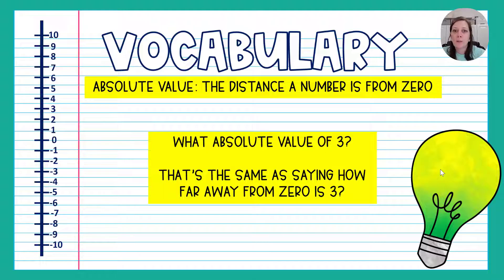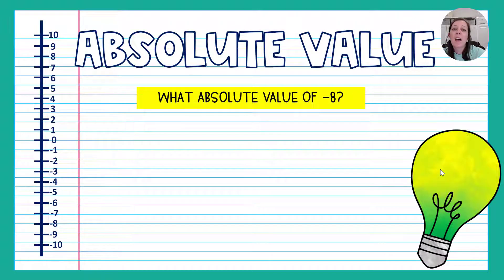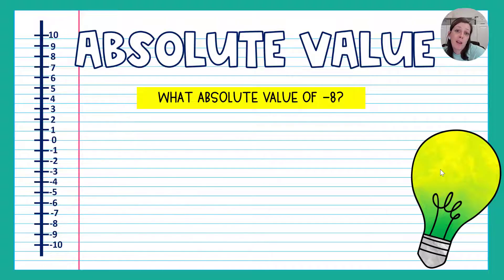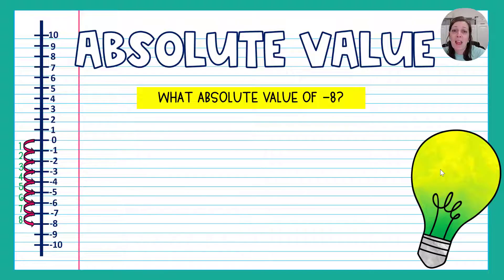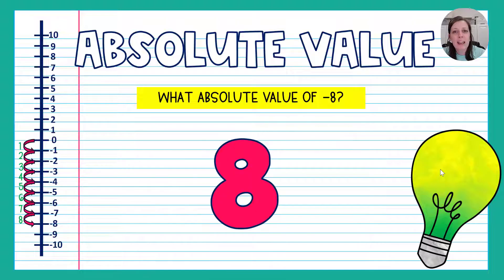Let's look at some examples. If I ask you the absolute value of negative eight, I'm really just saying what's the distance between zero and negative eight. So on the number line, I'm going to start at zero and count how many spaces until I get to negative eight — that's eight spaces. So the absolute value of negative eight is eight because it's eight spaces from zero.